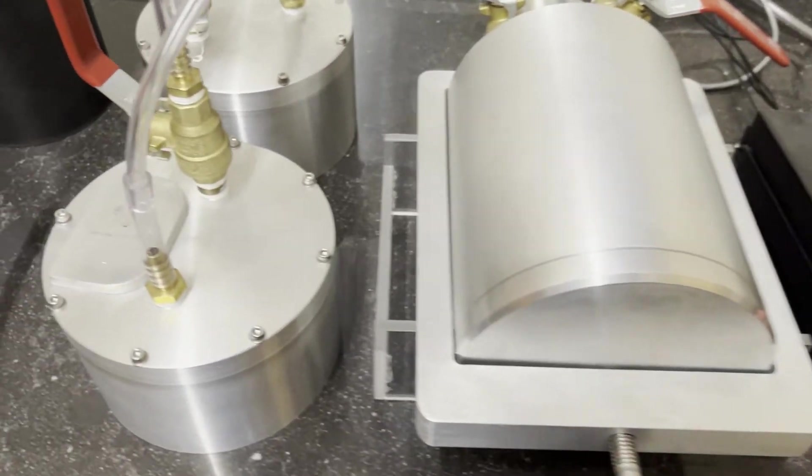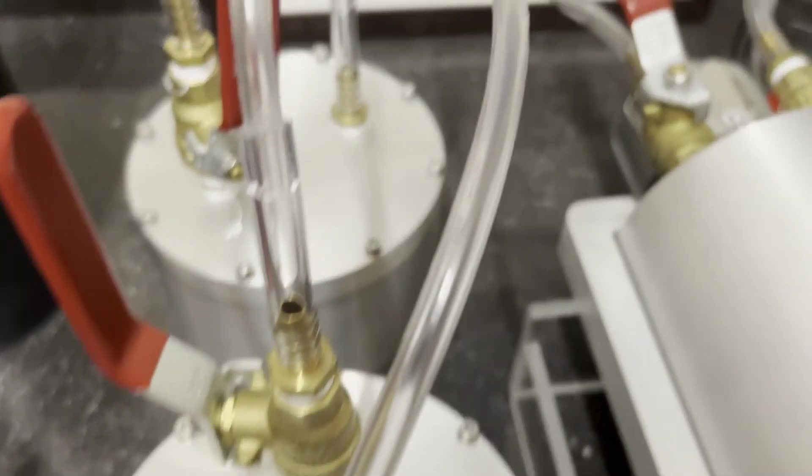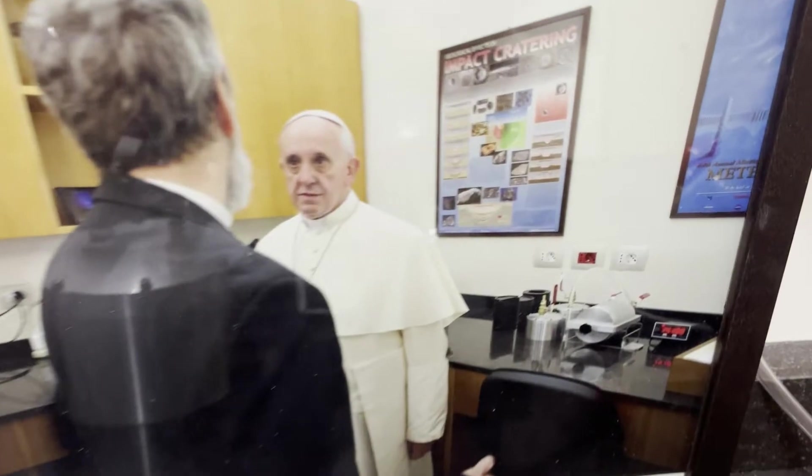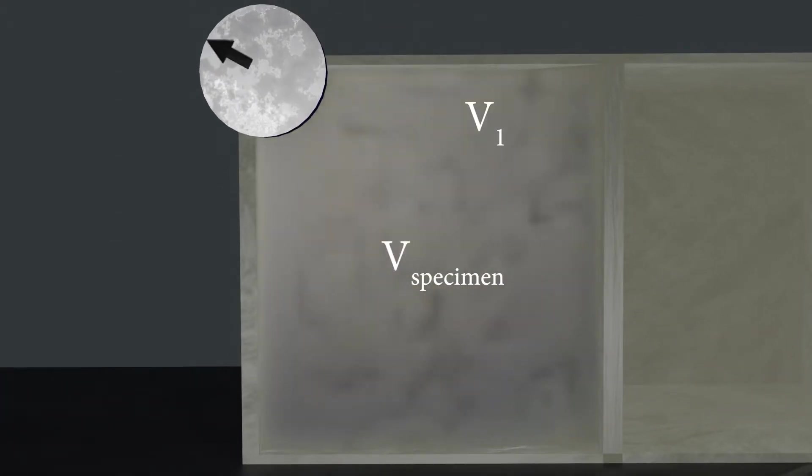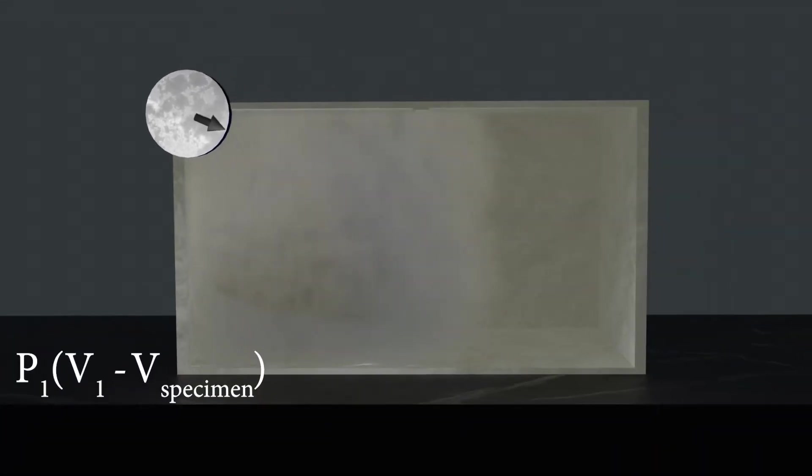I've already built some pycnometers, such as this one in my lab at the Vatican Observatory. An ideal gas pycnometer measures the volume of a specimen by using the ideal gas law. You put the rock into a chamber of known volume and pump it full of gas and measure the pressure. If the temperature doesn't change, the ideal gas law says that the pressure times the volume stays a constant value.